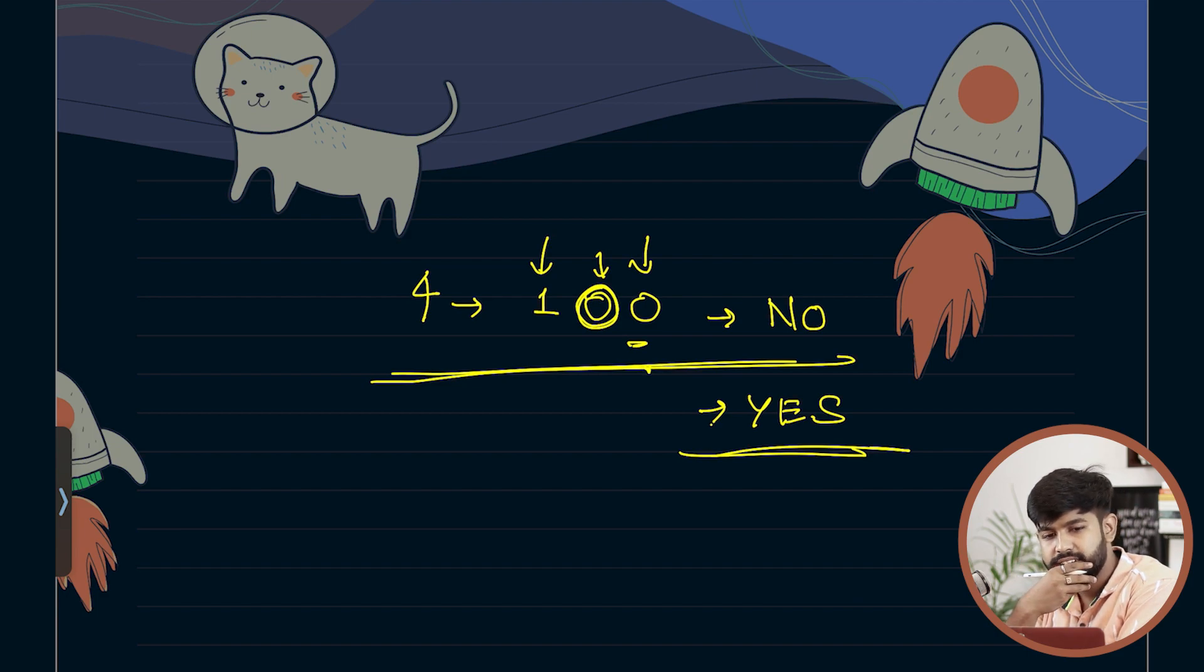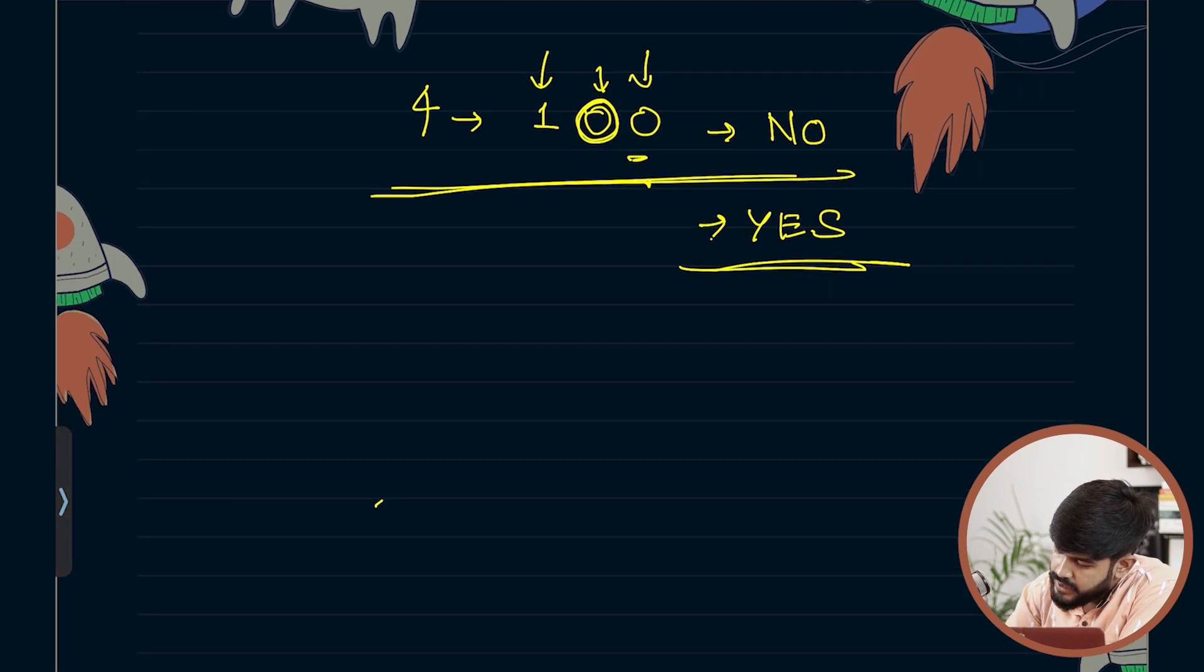So what we can do is, let's say it is something like 1000.